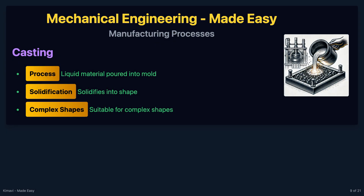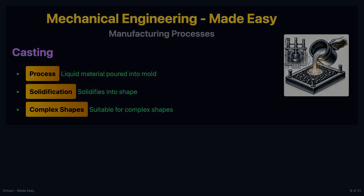Casting is a manufacturing process in which a liquid material is poured into a mold and allowed to solidify into the desired shape. This process is suitable for producing complex shapes and large parts.